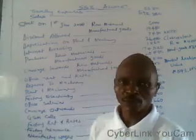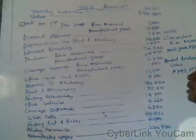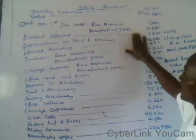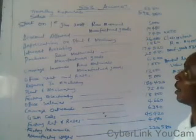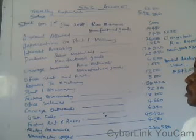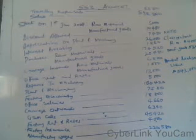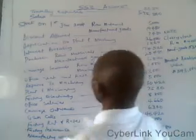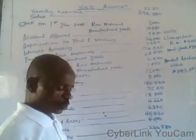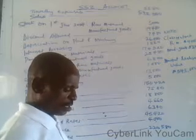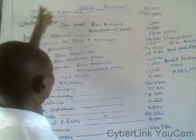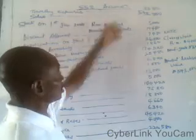Assalamu alaikum warahmatullahi wabarakatuh. This is the continuation of our division aspect of the e-learning program. The next topic, as we have already discussed, is about the format of the manufacturing, trading, profit and loss account. This is the first illustration on it, and the first question requires you to prepare the manufacturing, trading, profit and loss account.